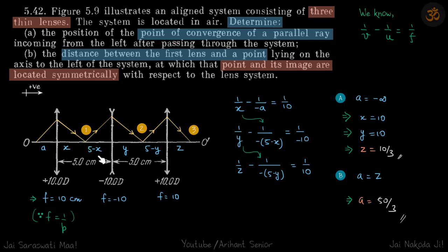So this becomes 5 minus x and this will be the object for the second lens and the second image forms at y. So this becomes 5 minus y and the final image forms at z.